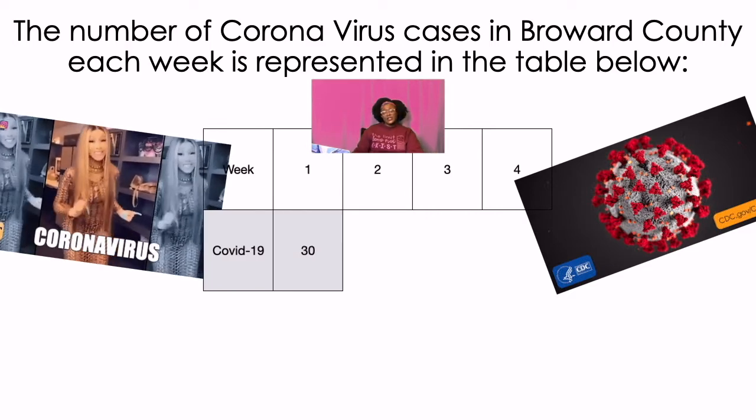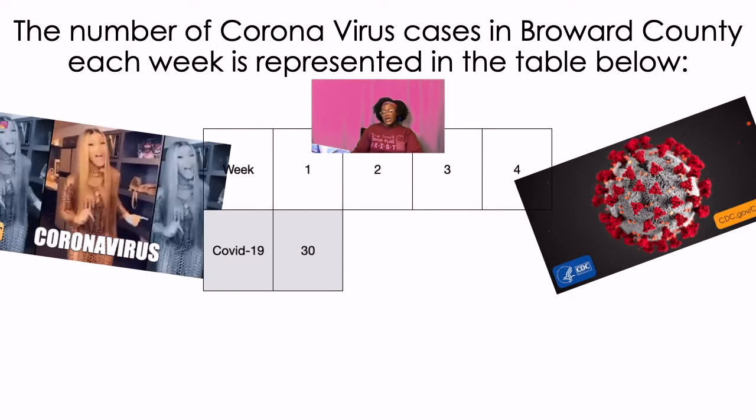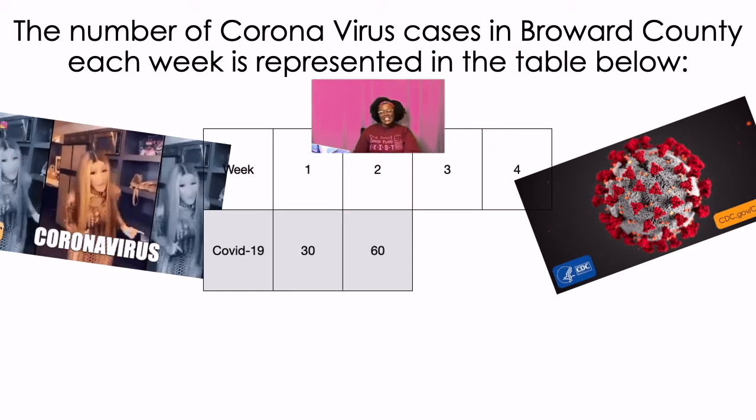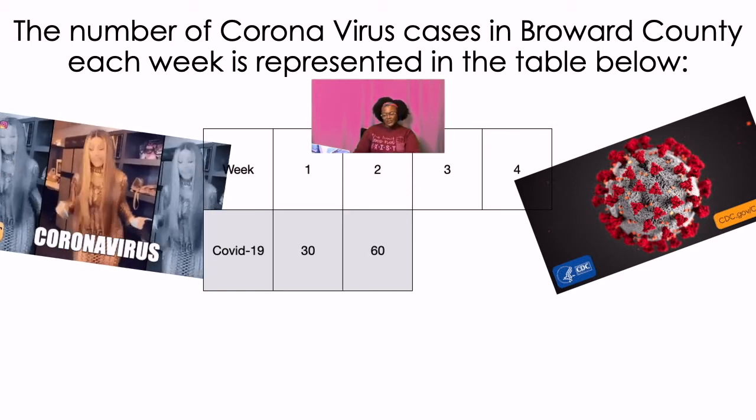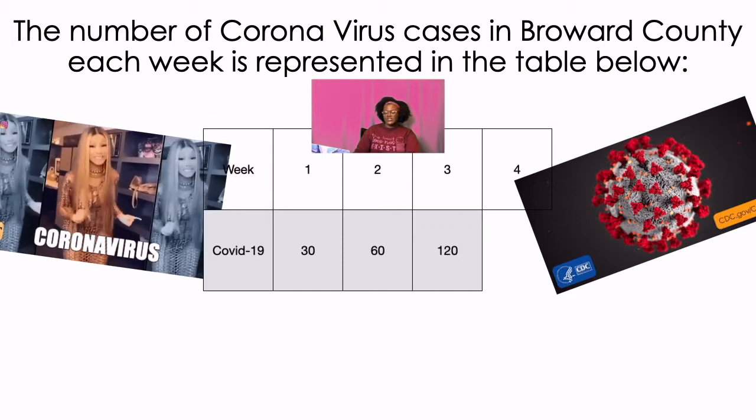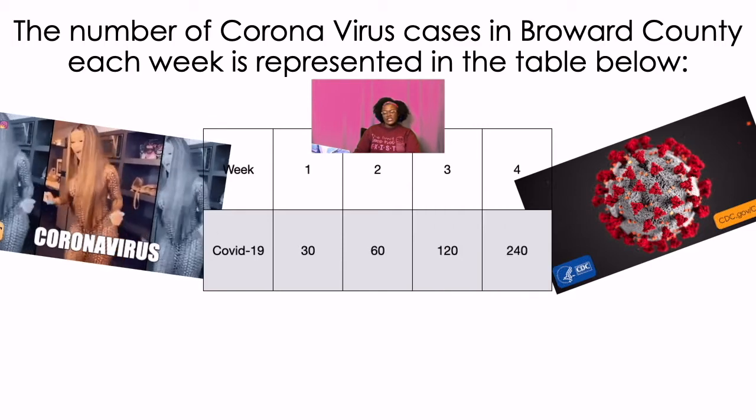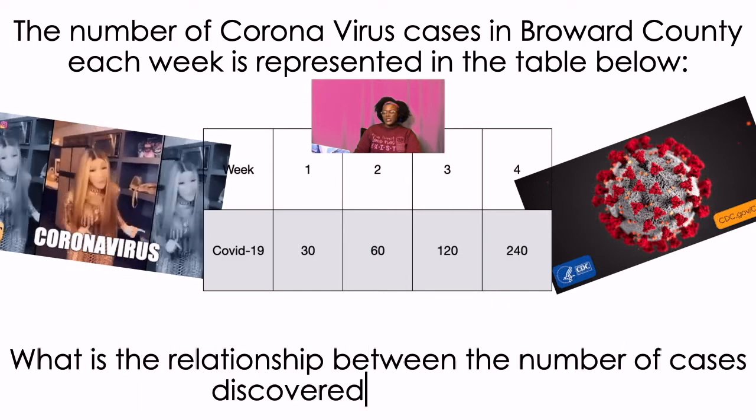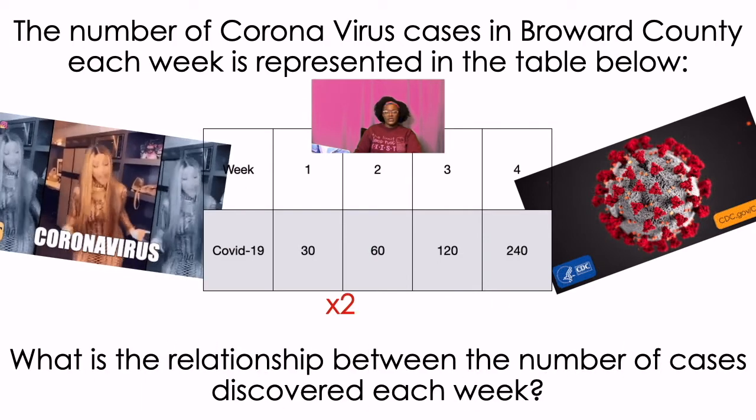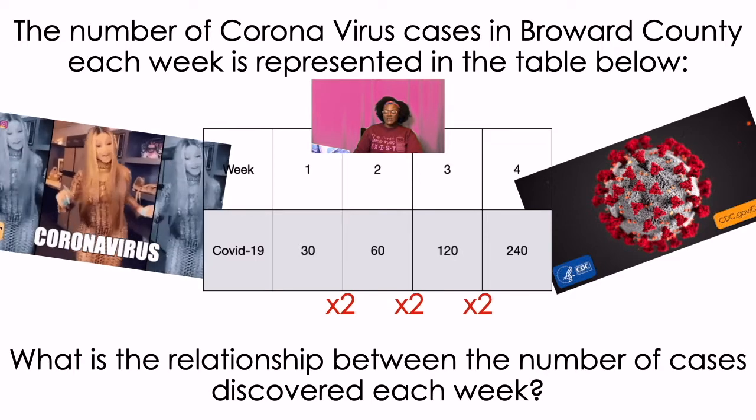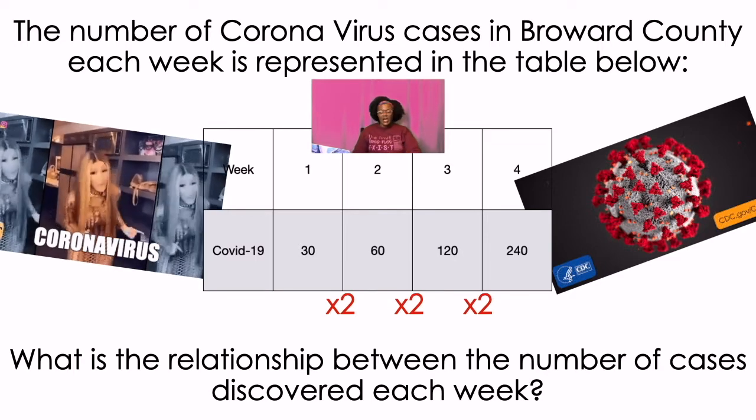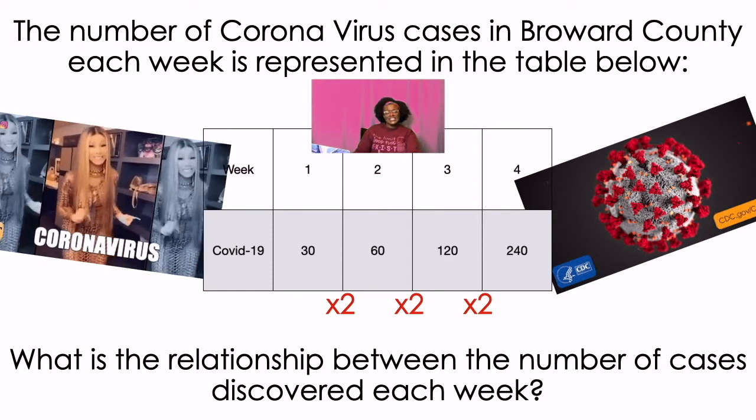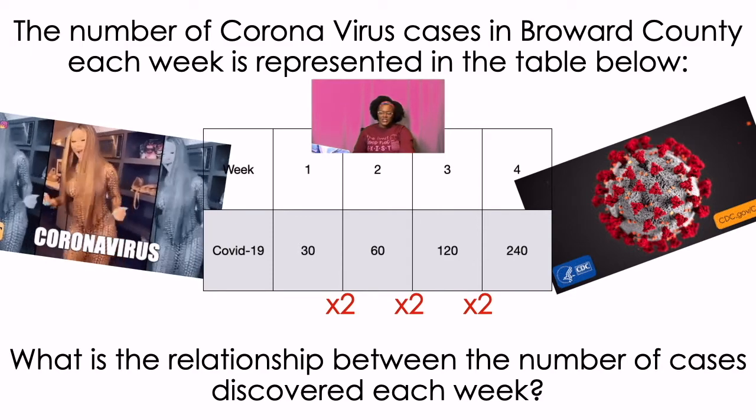Let's say week one, we discovered that there was 30 people in Broward County that have coronavirus. And then there's 60 people the next week, and then we see 120 people, and then we see 240 people. What is the relationship between the number of cases discovered each week? Well, it's times two, it's doubling. So when something is growing at a rate like doubling, tripling, something like that, we call that exponential growth.